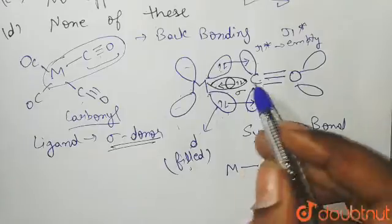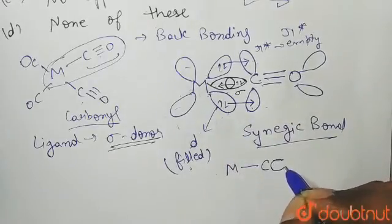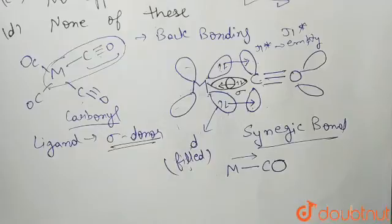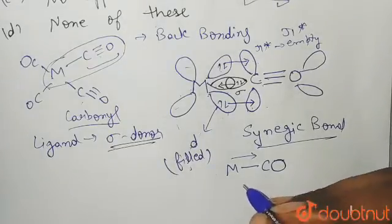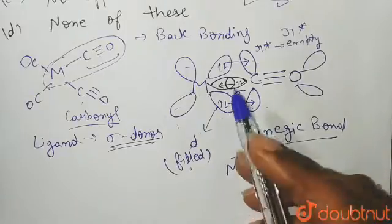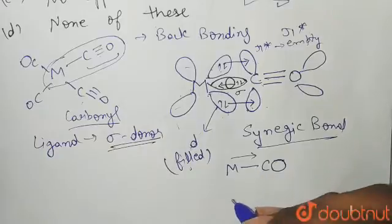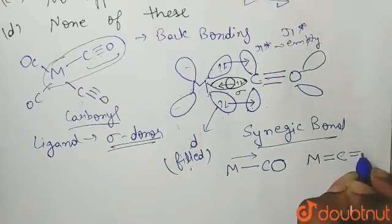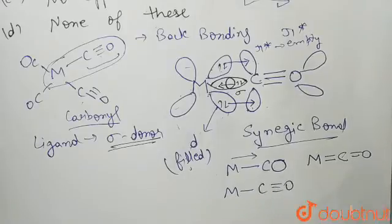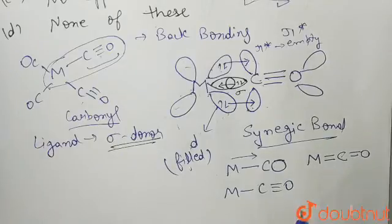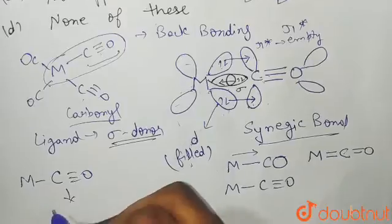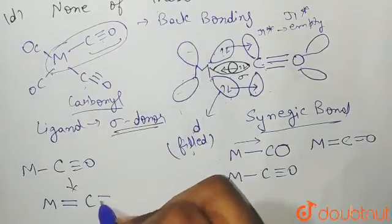Because of this synergic bond, the M-C bond gets a double bond character. Earlier, when there was only a sigma bond — when the carbonyl was only donating — the M-C had only single bond character. But now the metal is also giving electrons back to the carbonyl through a pi bond, so you get M double bond C, or M=C=O. Carbon cannot form five bonds, so it converts to a double bond.